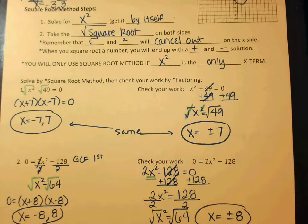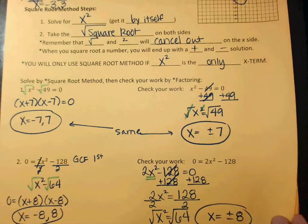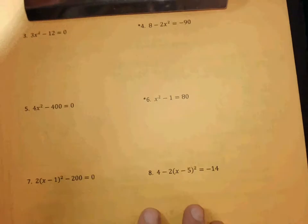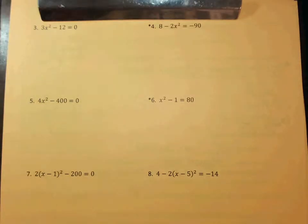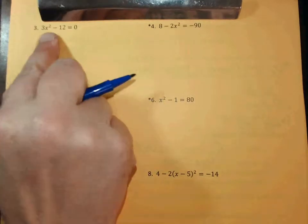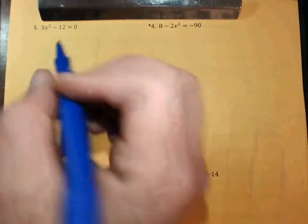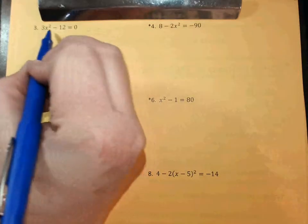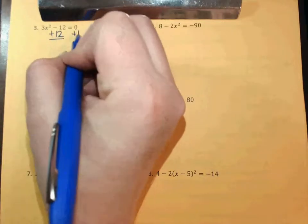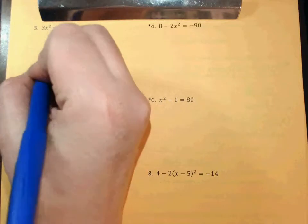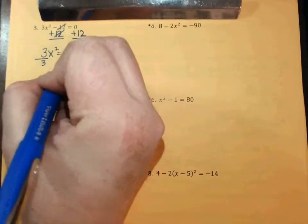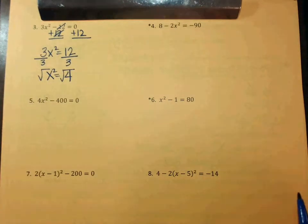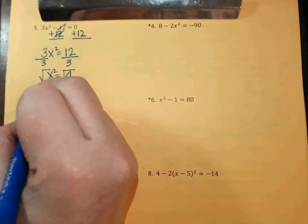Go ahead and turn over to the back and we'll do a couple of examples. Look at number 3 — we need the X squared alone. Can't square root it until we get it by itself. Always add and subtract first. So if it's a minus 12, how do I get rid of a minus 12? Add 12. So 3X squared equals 12. What would I do next? Divide by 3. 12 divided by 3 is 4. Next step — square root. 4 square rooted is what two numbers? Plus or minus 2.